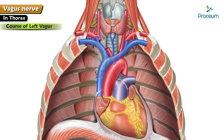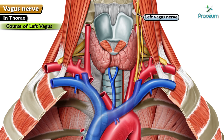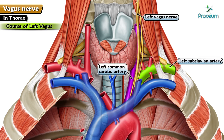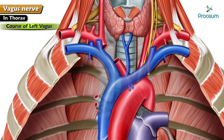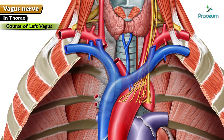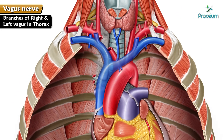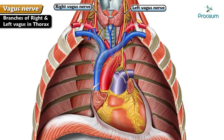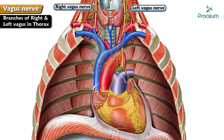The left vagus enters the thoracic cavity between the left subclavian and left common carotid arteries, posterior to the brachiocephalic vein, and is in relation to the left surface of the arch of the aorta. Near the hilum of the left lung, it gives off the pulmonary plexus. In the thorax, branches of the right and left vagus form the deep cardiac plexus to supply the heart, the pulmonary plexus to the trachea and bronchial tree, and the esophageal plexus to the esophagus.